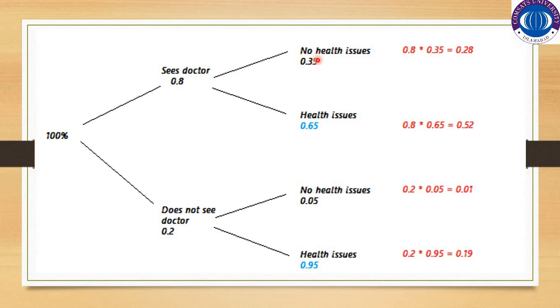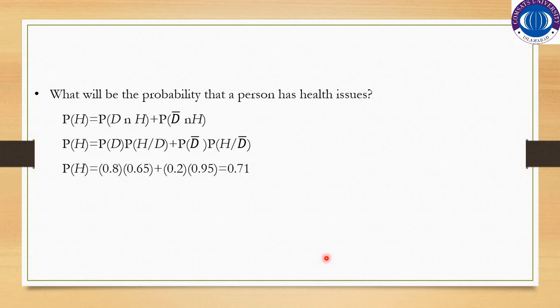The probability that the person who sees the doctor has no health issues is 0.35, and the probability that the person who sees the doctor has health issues is 0.65. Similarly, the person who does not see the doctor has no health issues with probability 0.05, and the person who does not see the doctor has health issues with probability 0.95.